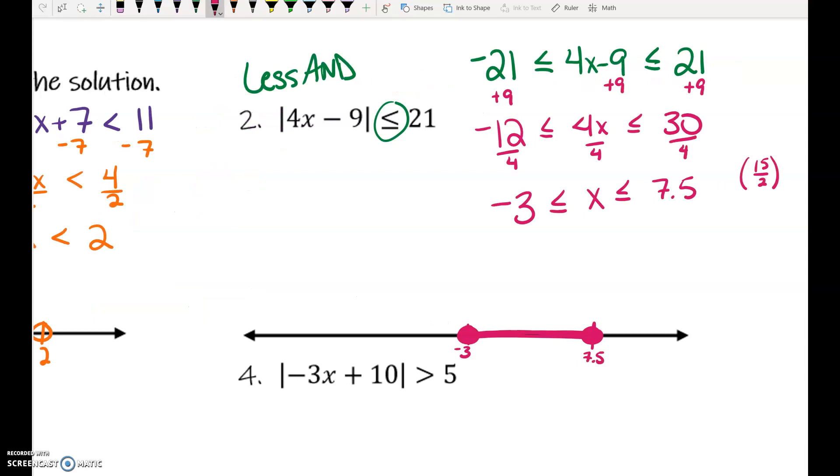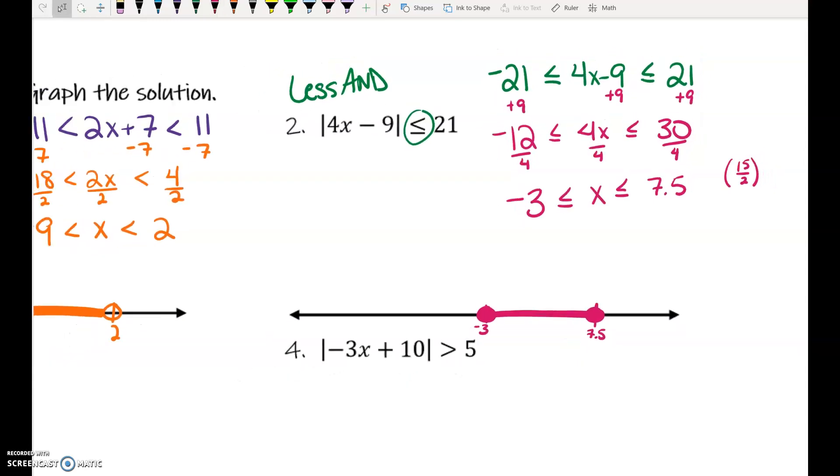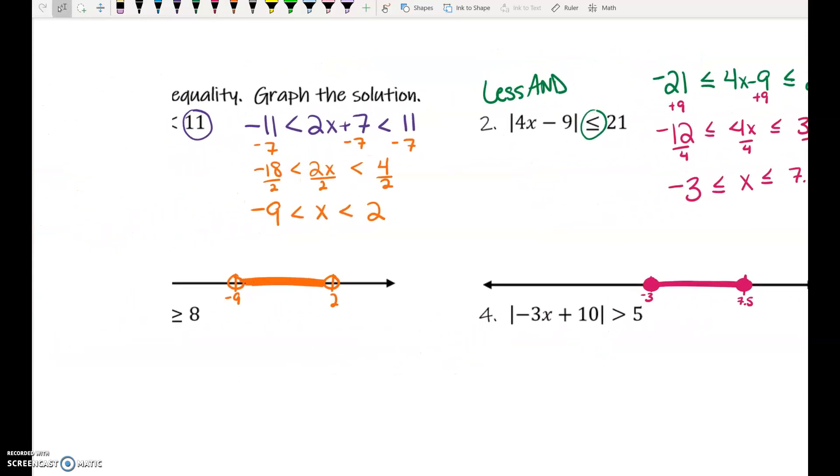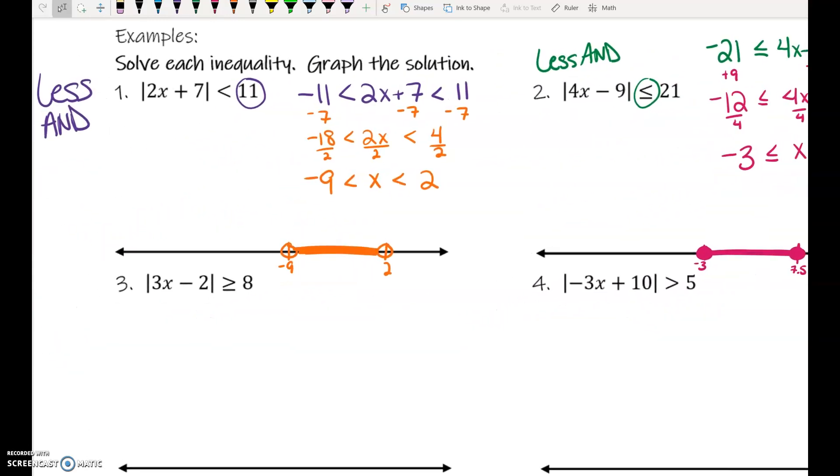I don't care whether you put it as 7.5 or 15 thirds. If you want to write this as decimals to make it easier to put it on the number line, that is totally fine with me. Okay, number 3. This time we're looking at greater.